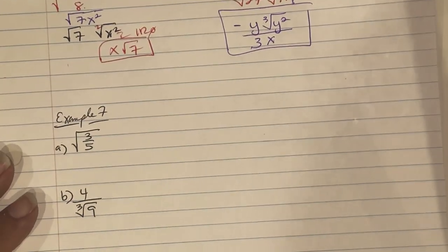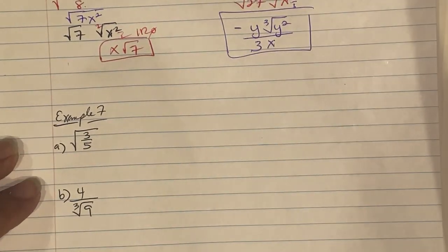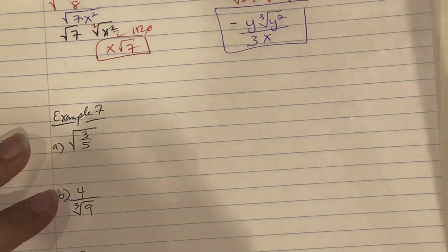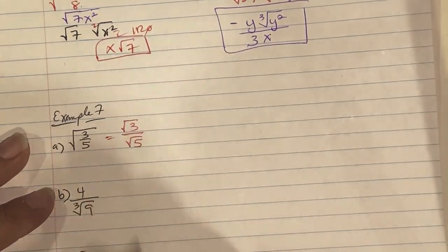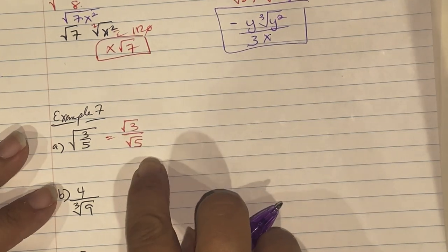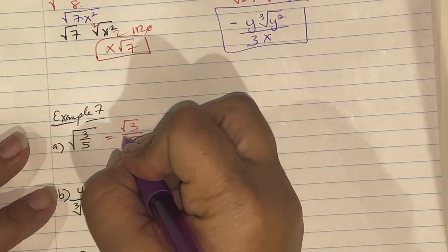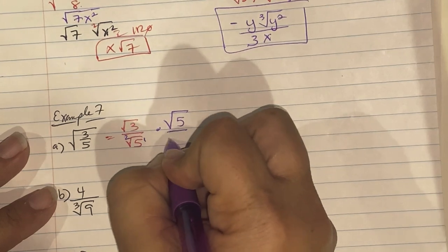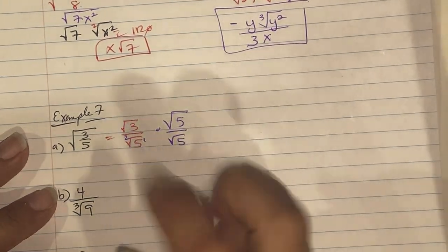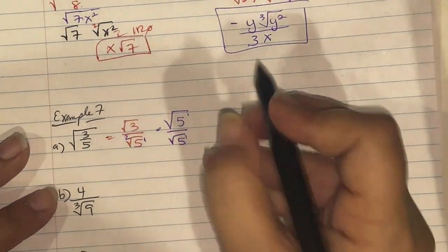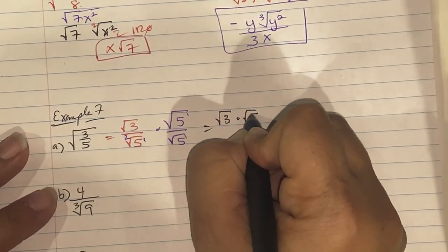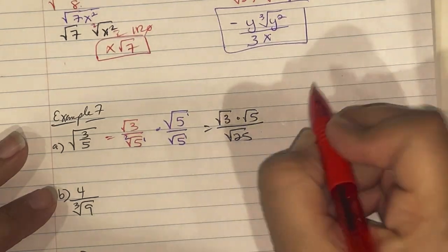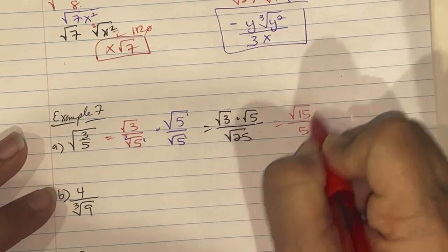Example 7 introduces rationalization — we're not allowed to have radicals in the denominator. For √(3/5), rewrite as √3/√5. To rationalize, multiply top and bottom by √5 (since the index is 2, we need two factors of 5). This gives √3 · √5 / √25 = √15 / 5.